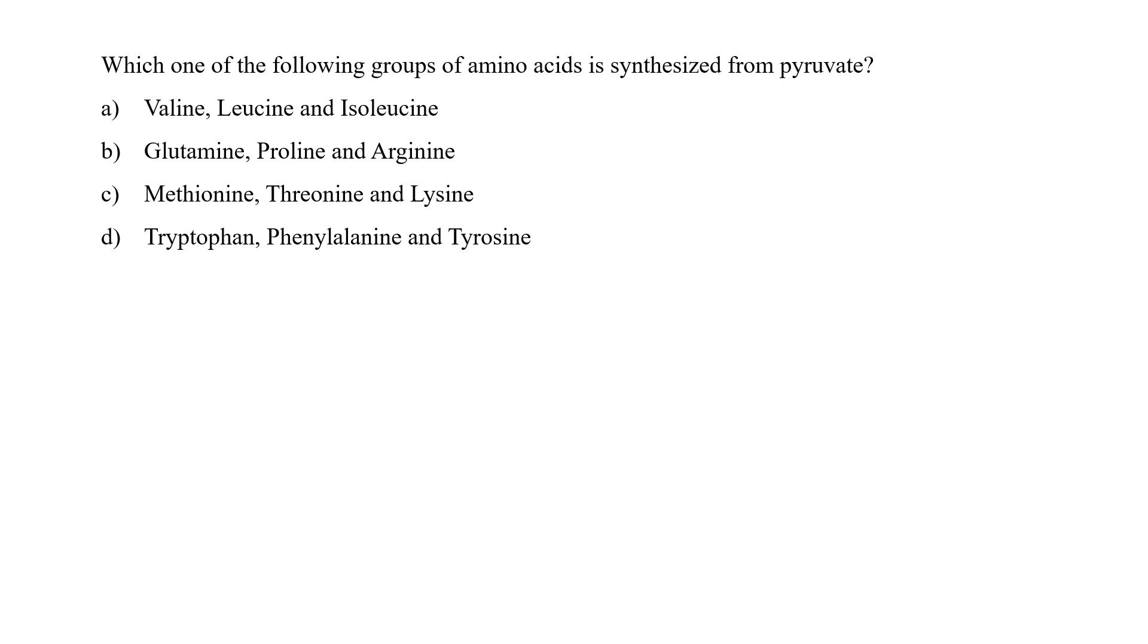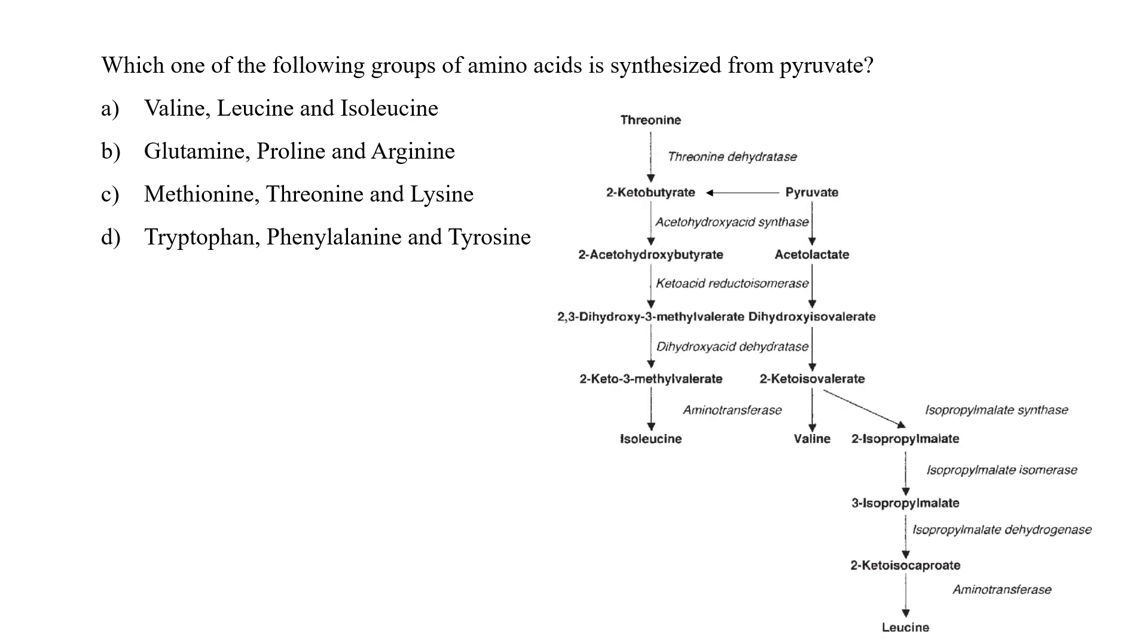Valine, leucine and isoleucine are branched amino acids. If we see isoleucine synthesis, it starts from 2-ketobutyrate which may come from threonine or maybe from pyruvate. So pyruvate is the ultimate precursor for definitely isoleucine. And as you can see, it is also a precursor for valine and leucine. So in the present case, option A would be the correct answer—valine, leucine and isoleucine can be synthesized from pyruvate directly or indirectly.